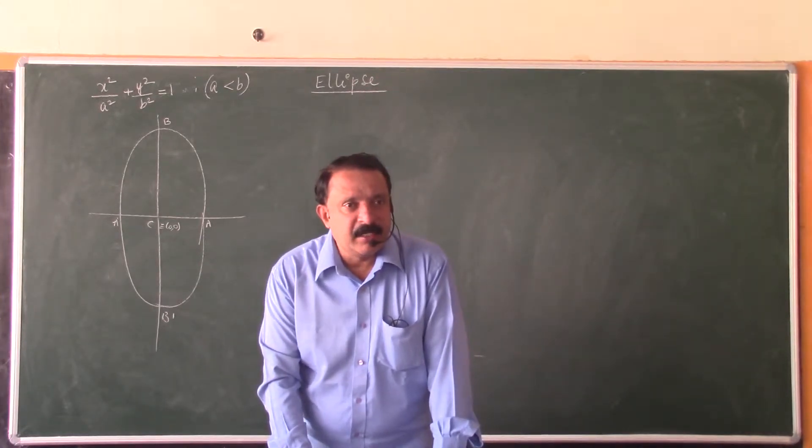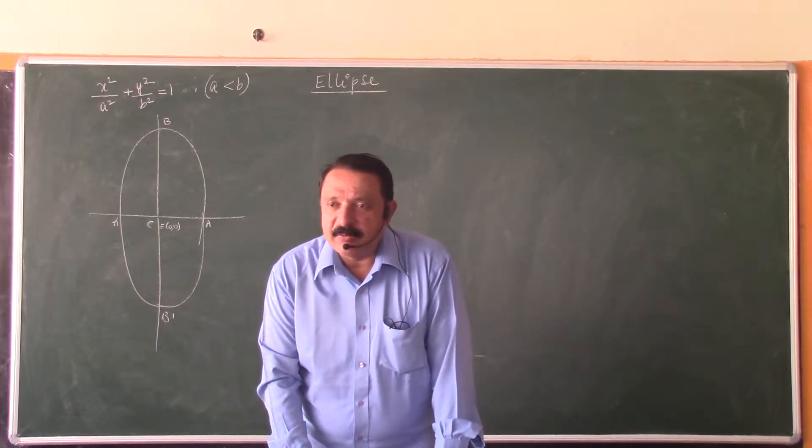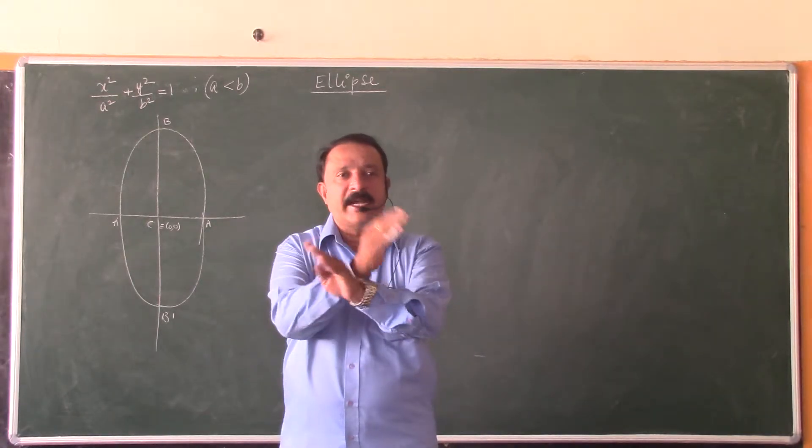If a is less than b, to get the details of the ellipse, you have to interchange all x and y details.